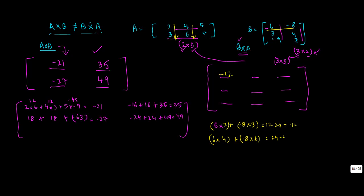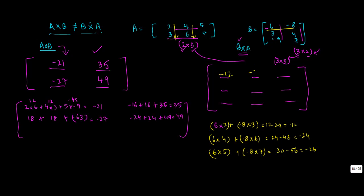For first row, third column: 6×5 + (-8)×7 = 30 - 56 = -26. So the first row of B×A is [-12, -24, -26].